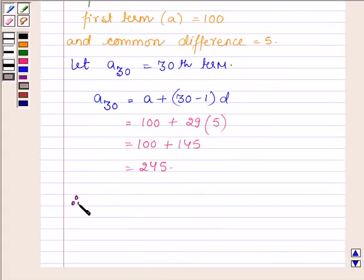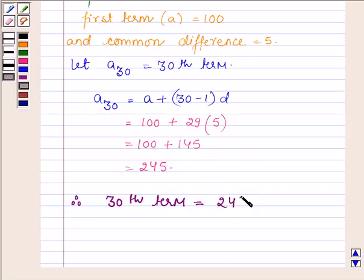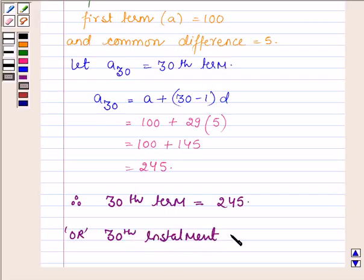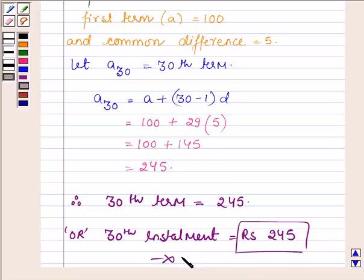Therefore, the 30th term of the AP is 245, or we can say that the 30th installment is equal to rupees 245. This completes the session. Take care and have a good day.